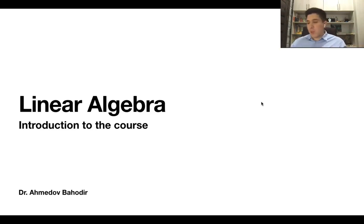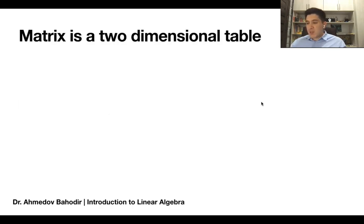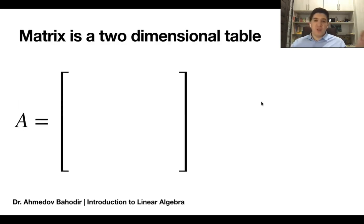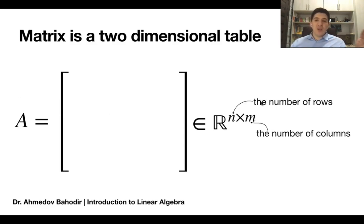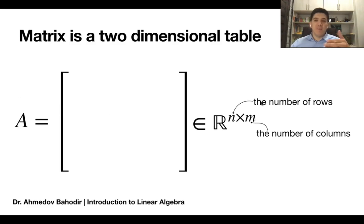A matrix is a two-dimensional table with a certain number of rows and a certain number of columns. We're going to denote the dimension of matrices as n by m, where n is the number of rows and m is the number of columns. For example, if you are given a matrix with two rows and three columns, this is a matrix with dimension two by three.